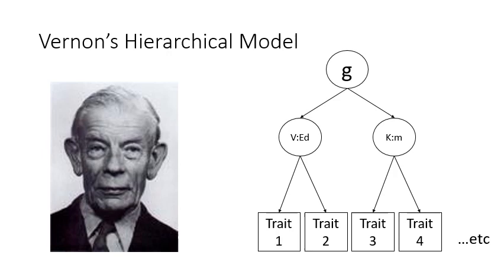Then you only had two factors underneath it. What Thurstone called PMAs, Vernon's was v:ed and k:m, where v:ed was verbal educational and k:m was spatial mechanical. These were his stratum 2 levels. There were traits that fell underneath that—there were many, many traits. He didn't really define how many—he just said they were a lot, and all of the traits he believed fell under one of those two: either verbal educational or spatial mechanical.